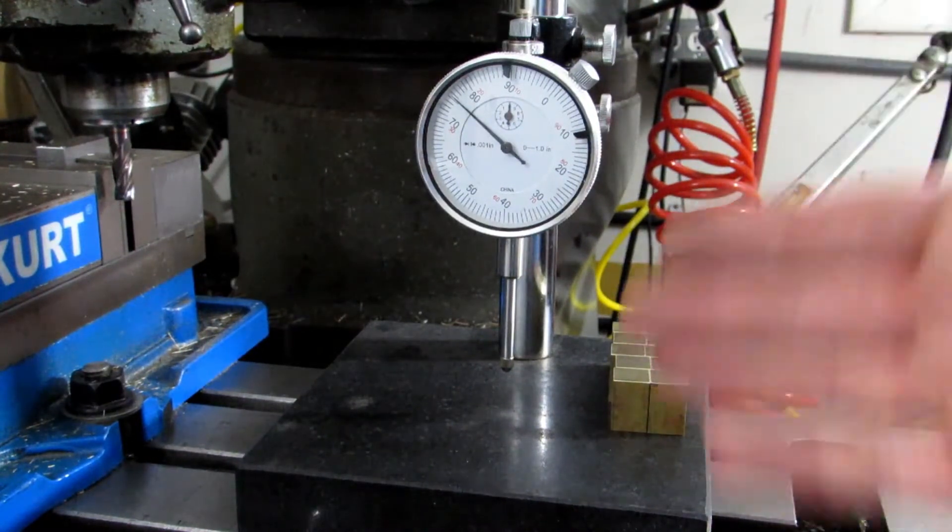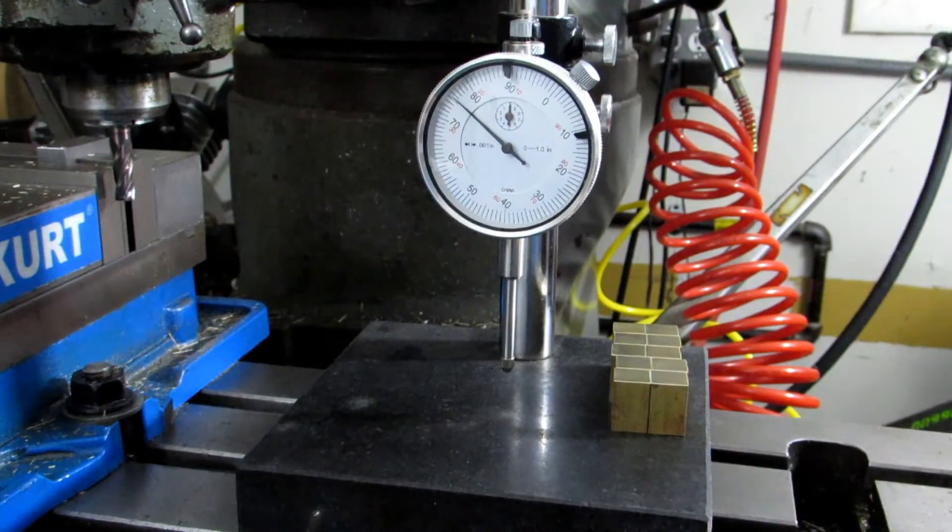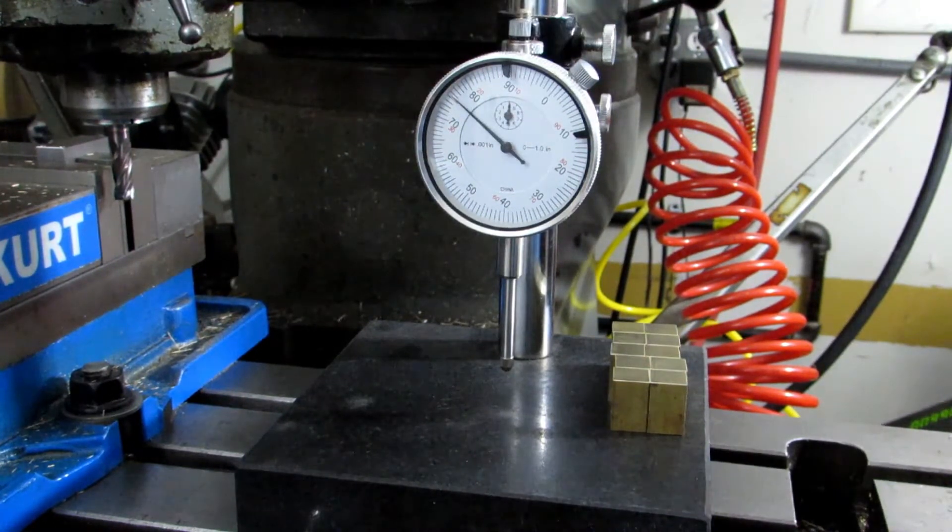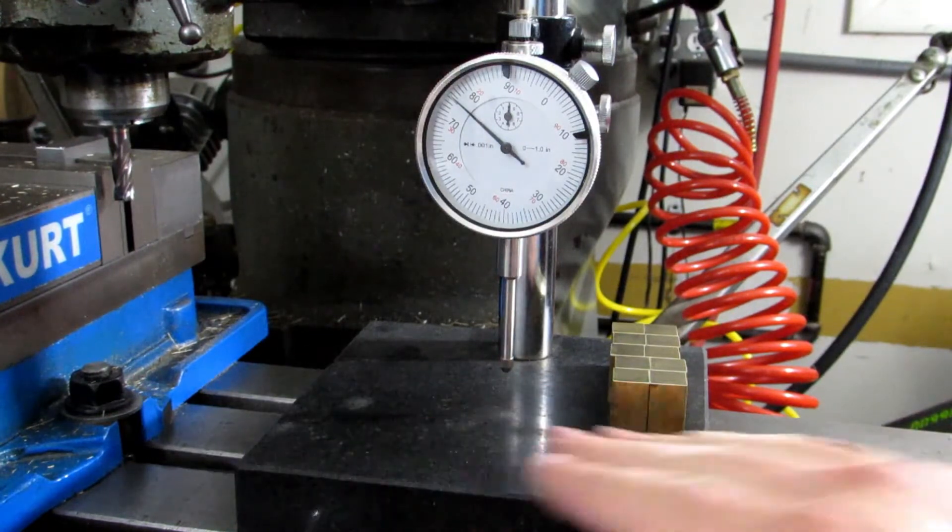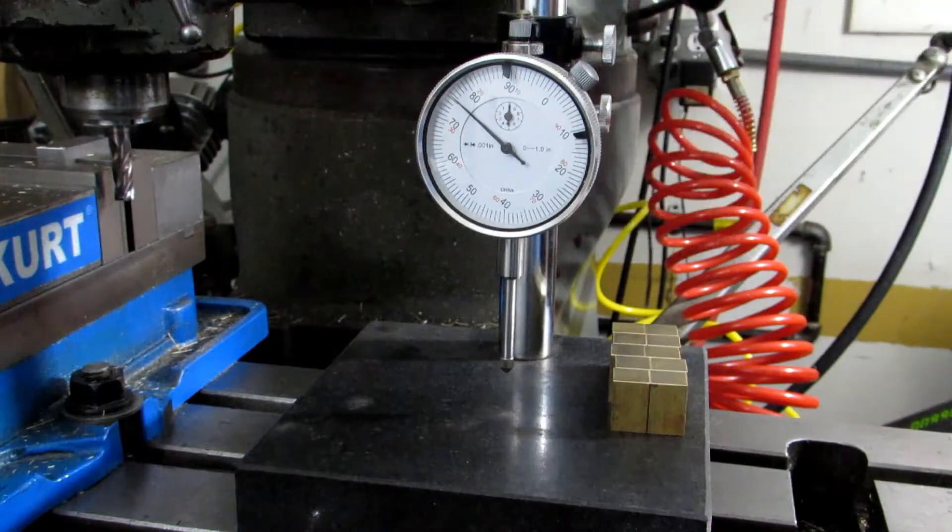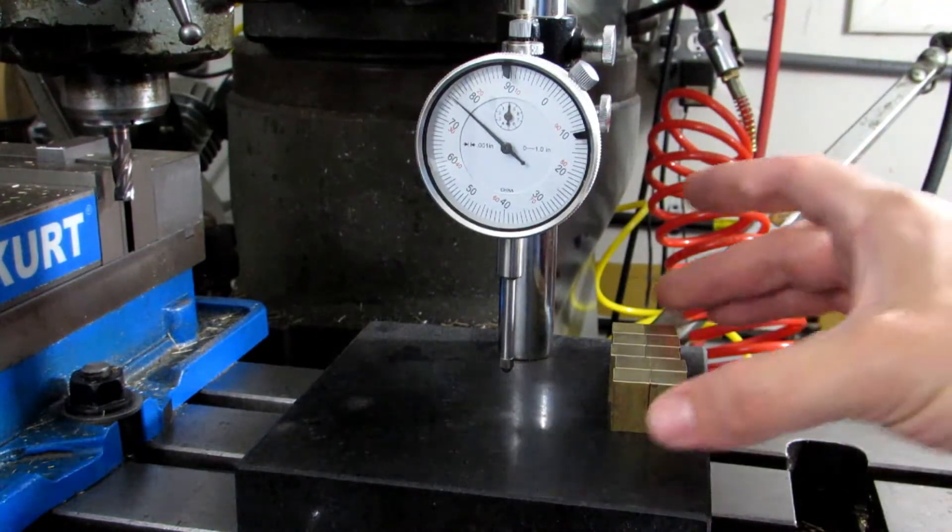I've got one of these granite comparator stands. You can get these relatively cheaply in the catalogs. They come with a dial indicator - of course you could put a more high-quality dial indicator on there if you'd like. The granite is just like a little surface plate, it's flat. It's got this column with an indicator holder that rides up and down, and the purpose of it is to do just this thing.